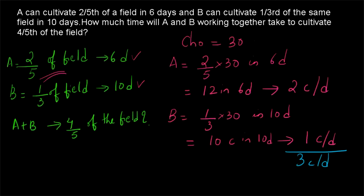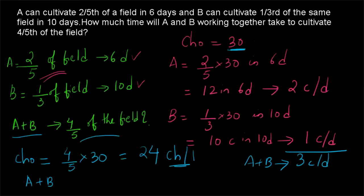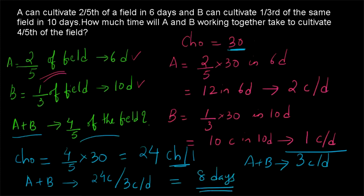The question asks how much time will A and B together take to cultivate four-fifths of the field. The chocolates to be consumed by A and B together is four-fifths of thirty, which equals twenty-four chocolates. For consuming twenty-four chocolates, with A and B together having three chocolates per day, the time taken is twenty-four divided by three, which gives us eight days. So eight days will be taken by A and B together to cultivate four-fifths of the field.